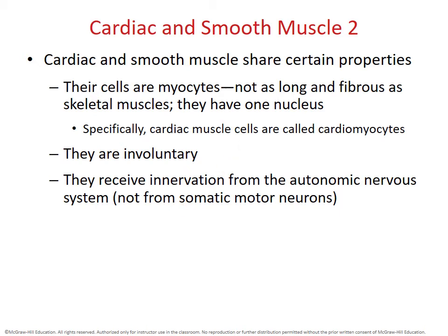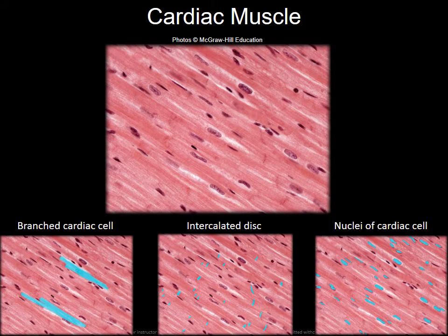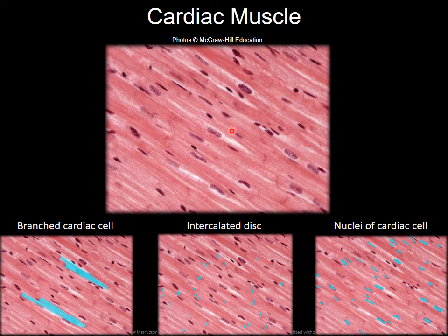Under the microscope, cardiac muscle tissue shows intercalated discs — darker lines representing gap junctions, which are specialized connections between neighboring cardiac cells. Cardiac cells are slightly striated with a single nucleus per cell — not multinucleate like skeletal muscle cells. They are also bifurcated, meaning they tend to be Y-shaped.